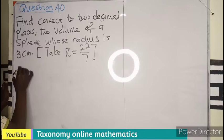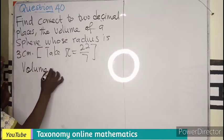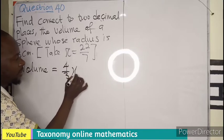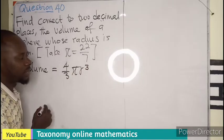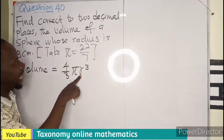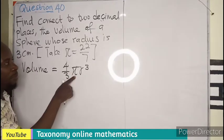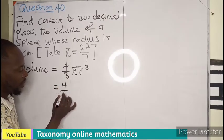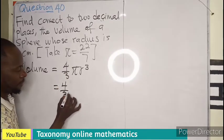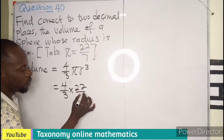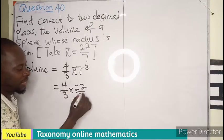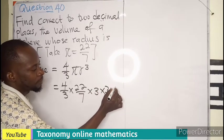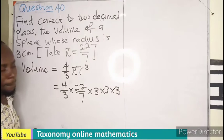We know that volume of a sphere is given as 4 over 3 pi r to the power of 3, where r is now 3, pi is 22 over 7. So by substitution, 4 over 3 times 22 over 7 times 3 exponent 3, that is 3 times 3 times 3.